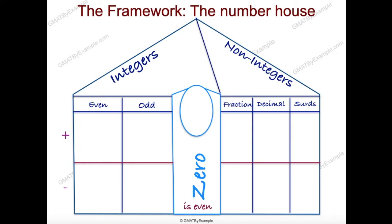Zero gets its own area with a footnote that it is even. Similarly, fractions, decimals, and irrationals are all interchangeable, but I want you to consider these values separately when solving problems. There is one additional thing in the framework: think of prime numbers. There is one even prime number, which is 2, and the rest are odd. This completes our framework.